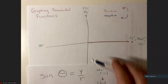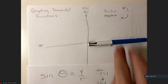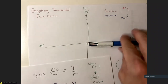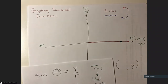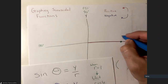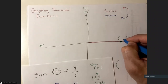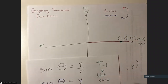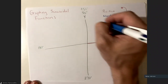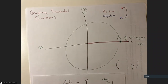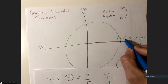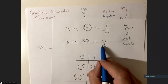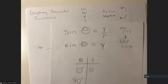When θ is zero degrees, we have an angle pointing along the positive x-axis, and the y-coordinate of any point on that ray is zero. So with radius 1 we have the point (1, 0), giving a y of zero. Therefore sine of 0 equals 0. At 90 degrees, x is zero and y is as high as it can go — it equals the radius, which is 1. So sine of 90 equals 1.